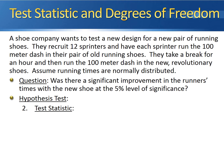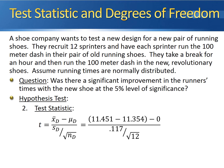Next, we'll calculate the test statistic. We know that the test statistic follows a t-distribution, and it's calculated by taking the difference between the sample means and subtracting off the hypothesized difference in the numerator. The denominator is the sample standard deviation of the differences divided by the square root of the sample size. This gives us 11.451 minus 11.354 minus 0 in the numerator, divided by 0.117 over the square root of 12. Working this out gives us a test statistic of 2.872.